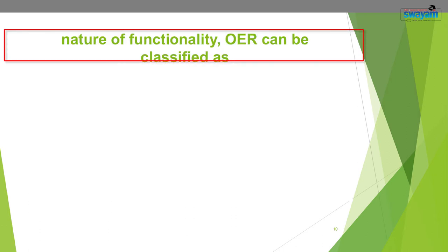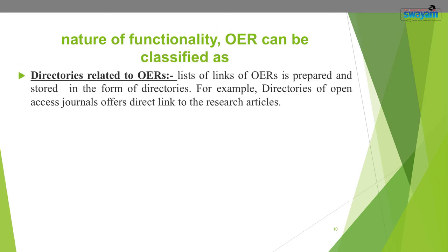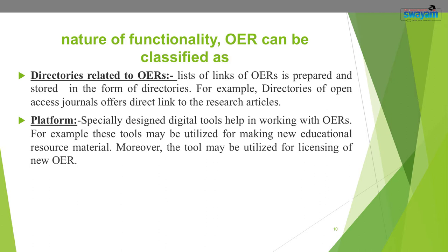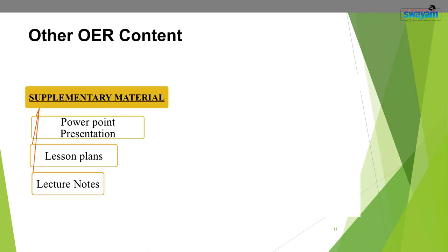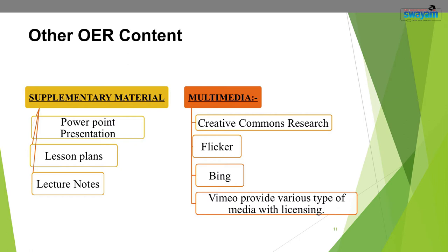As per the nature of functionality, OERs can be classified as: directories — where lists of links of OERs are stored, for example directories of open access journals offering direct links to research articles; platforms — specially designed digital tools for working with OERs, such as for making new educational resource material or for licensing new OERs; repositories — collections of OERs or databases developed by institutions, such as OER Commons and Merlot, available as PowerPoint presentations, lesson plans, or lecture notes; and multimedia — Creative Commons resources from Flickr, Bing, and Vimeo providing various types of media with licensing.